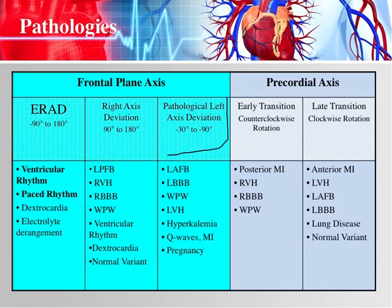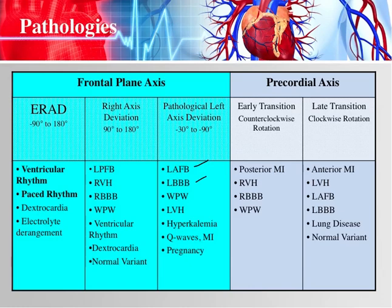Pathological left axis deviation is from negative 30 to negative 90 degrees. The range from 90 to negative 30 degrees would be considered normal — and there's a little caveat to that I'll talk about later. The common causes of pathological left axis deviation include most commonly left anterior fascicular block, left bundle branch block, Wolf-Parkinson-White syndrome, left ventricular hypertrophy, hyperkalemia, Q waves from an MI, and pregnancy.